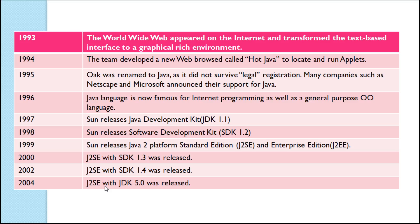The main feature of the Java language is that it is a platform-neutral language. Regardless of the hardware, operating system, or environment, you can execute any Java program — it is a platform-neutral language. That concludes Java History.